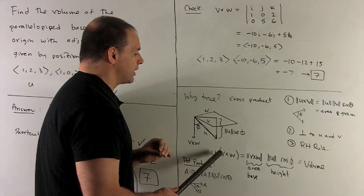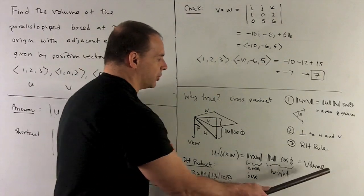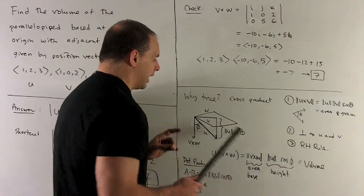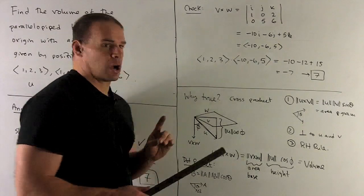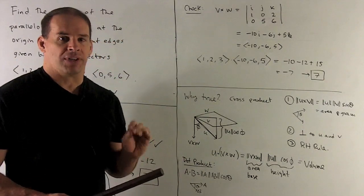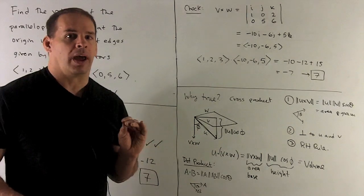So that says U dotted with V cross W is equal to our volume, okay, and note, we might be off by a sign depending on which way the direction of V cross W goes. So if a sign comes out, we just throw it away.